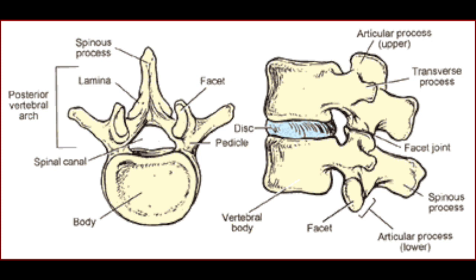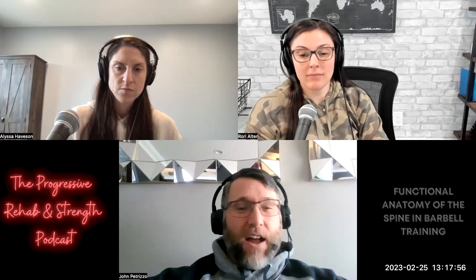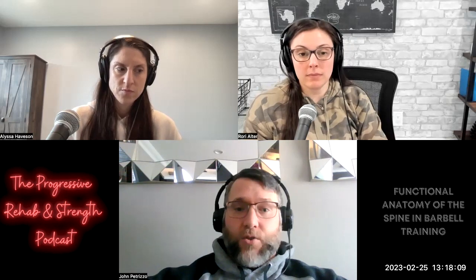The inferior facet of a superior vertebra articulates with the superior facet of the vertebra below, creating synovial joints that help with spinal stability and binding one vertebra to the next, and also help with transmission of compressive force. The intervertebral disc and vertebral body form the interbody joint, but that's not a synovial joint — it's an amphiarthrosis because the intervertebral discs are primarily fibrocartilaginous, with no joint capsule or synovial fluid like we see in extremity joints.